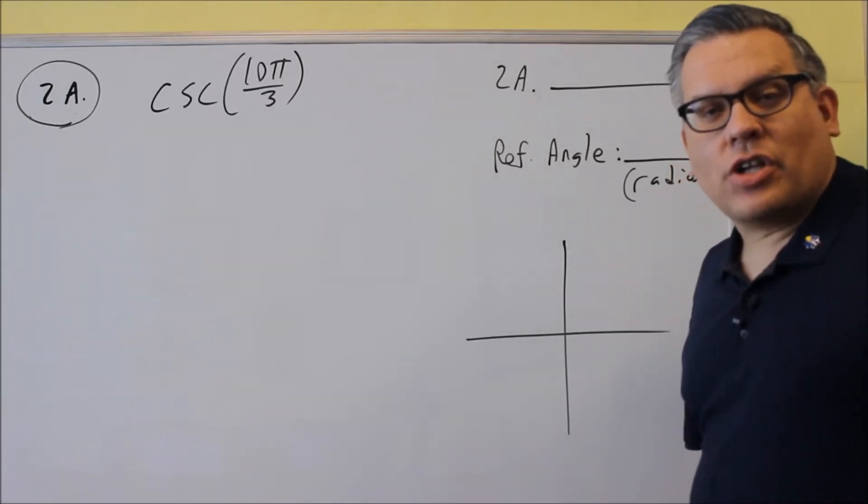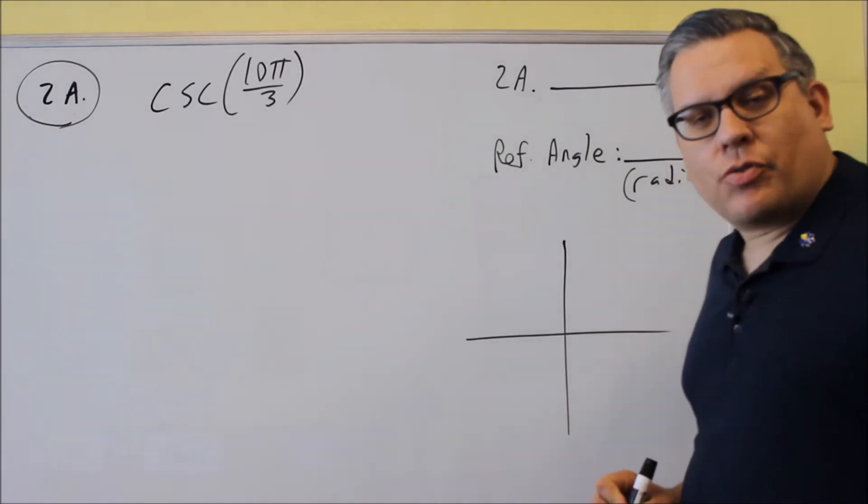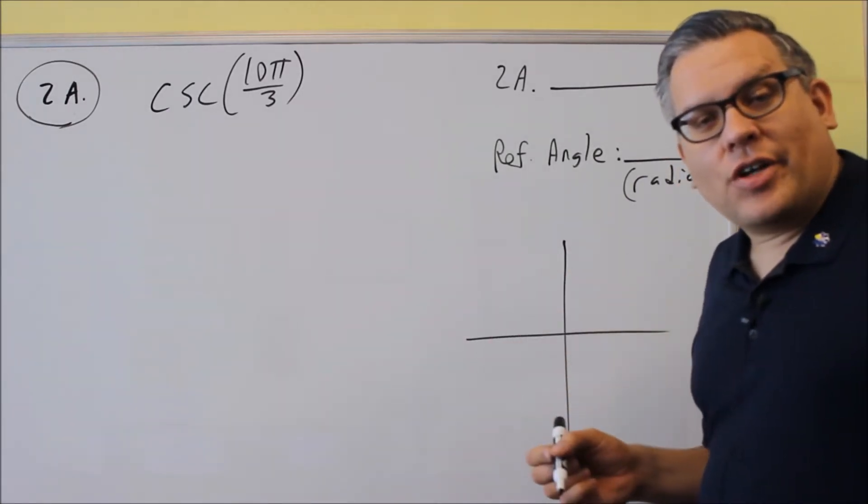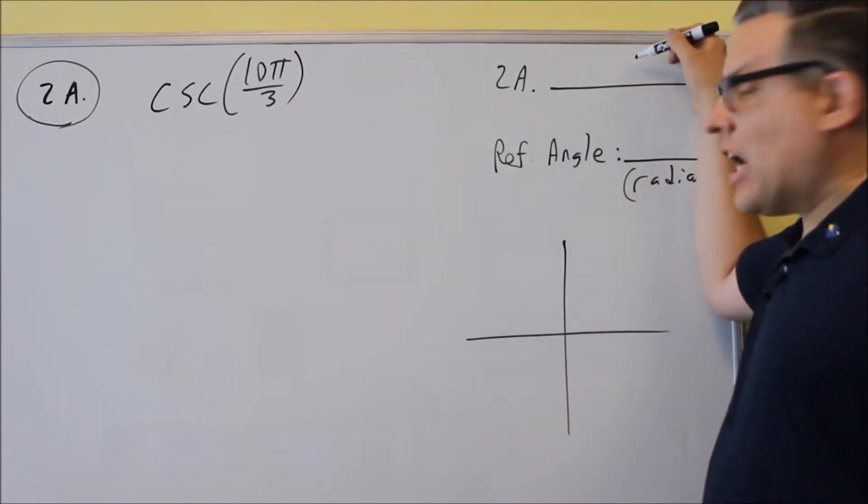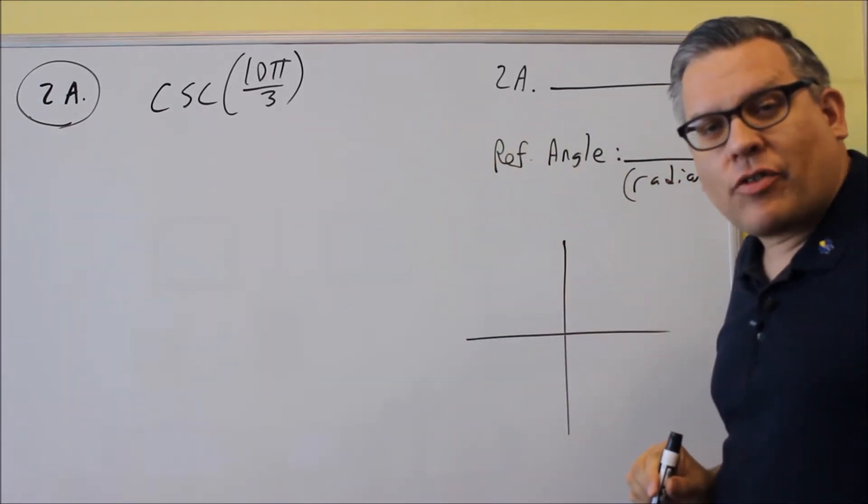Okay, for number two, you're going to have to understand reference angles, and it's going to ask for these same three things that you have on the sample. The top line is for the actual value, so what is the value of cosecant 10 pi over 3.